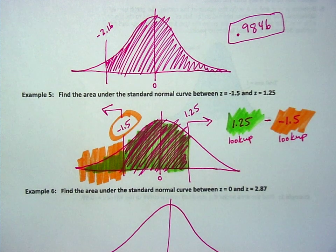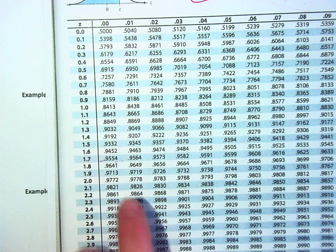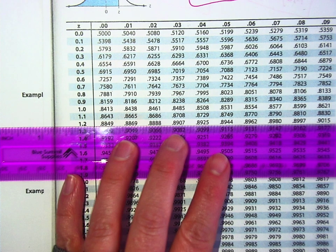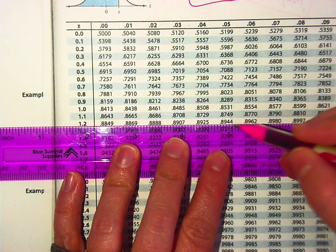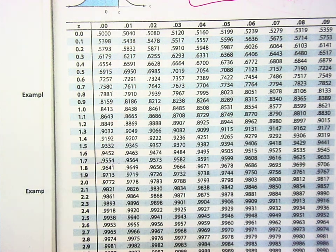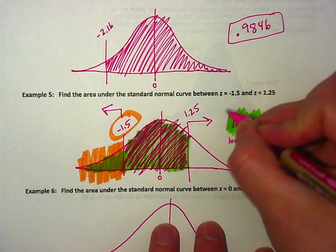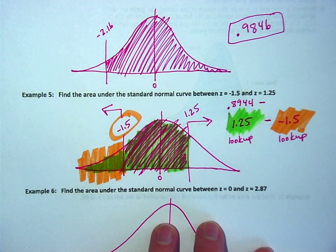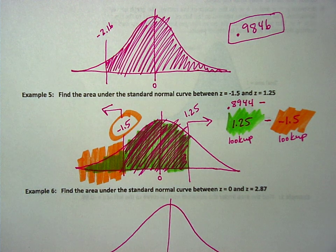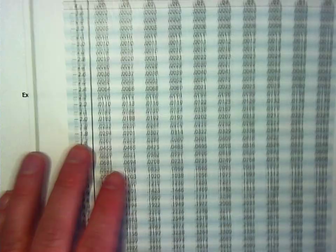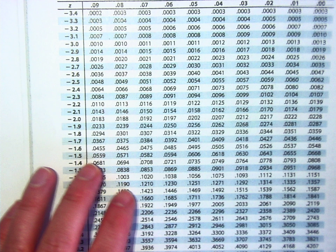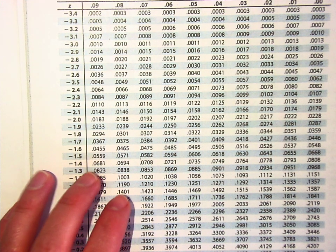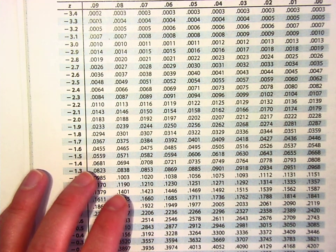So right now, let's look up 1.25 on the positive side. 0.8944, and I'm going to subtract, on the other side, the negative 1.5. Okay, what do you do if it's just negative 1.5? It doesn't have a hundredth place. I think it's zero. Zero.